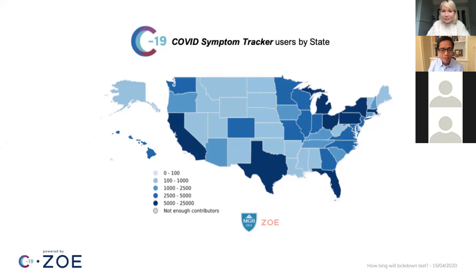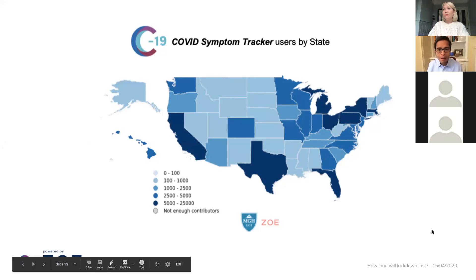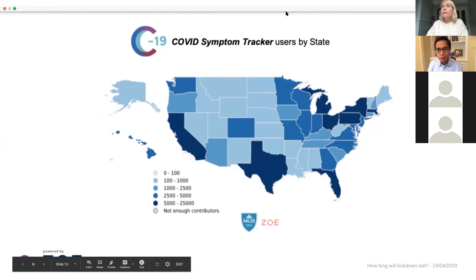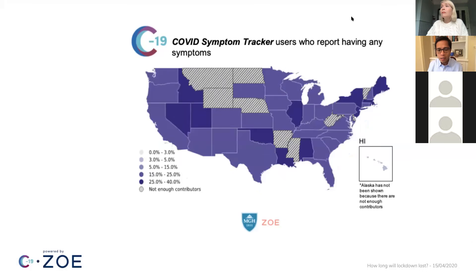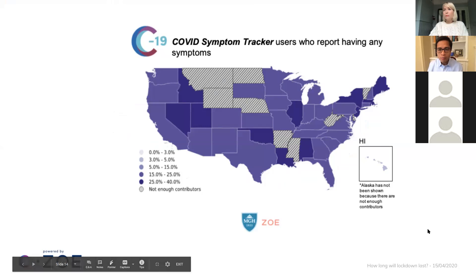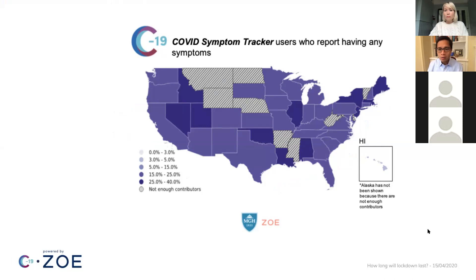This is an example of the power of the data we're generating — a map of users across the US. The dark blue represents places where we have the most users, reflecting both the networks of collaborators we've engaged and interest in specific parts of the country. We have participants all across the United States. This next slide shows the distribution of where people are reporting symptoms — the darker the purple, the more people in that area are reporting symptoms. There are areas around the country with much higher symptom burden, for example Massachusetts, New York, and parts of the South.